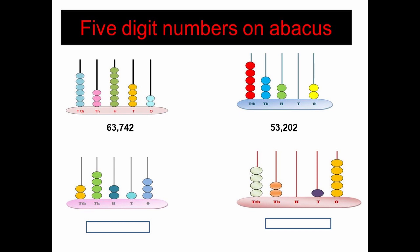In the second abacus example: ones place has two beads, tens place has no beads (so we write zero), hundreds place has two beads, thousands place has three beads, and ten thousands place has five beads. The number is fifty three thousand two hundred and two (53202).